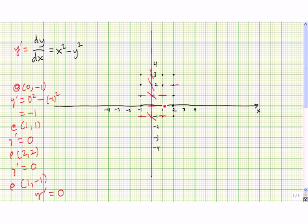Now let's check at the point (1,0). At this point, x is 1 and y is 0, so x squared minus y squared is 1 minus 0, or 1. At the point (1,2), x is 1 and y is 2. 1 squared minus 2 squared is 1 minus 4, and that's negative 3.